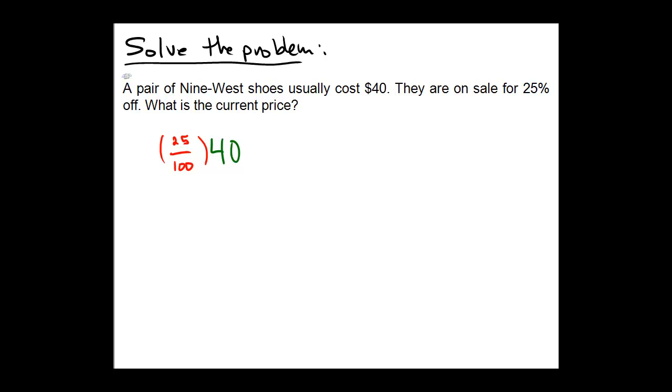25 over 100 is one way of representing 25%. So is 0.25. 0.25 could also be multiplied by 40.